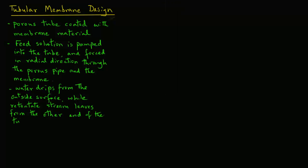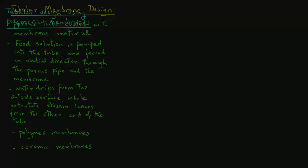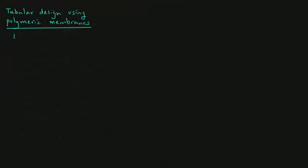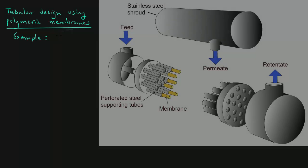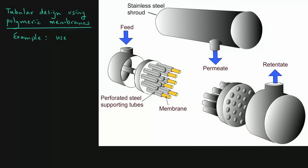There are various materials that are used, commonly polymeric materials for polymer membranes, and ceramic membranes are also used. We will look at both these examples. A tubular design that uses a polymeric membrane. Here is an example used in the dairy industry for ultrafiltration applications.